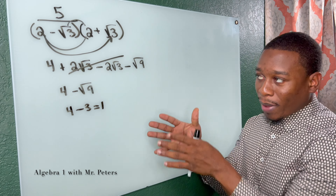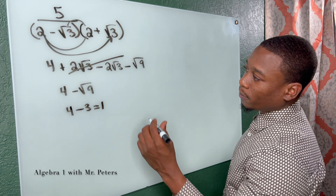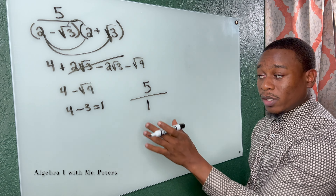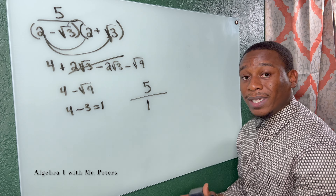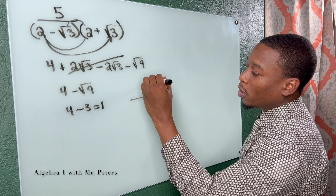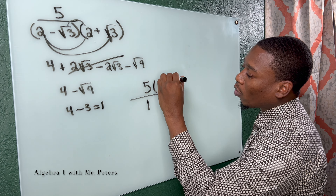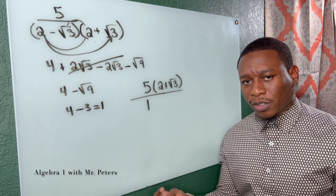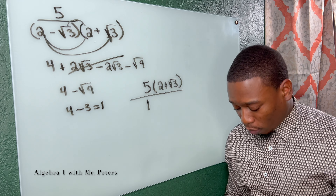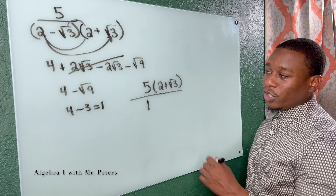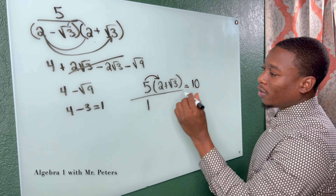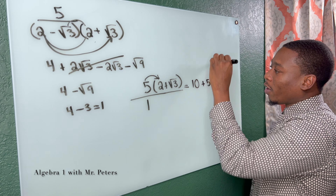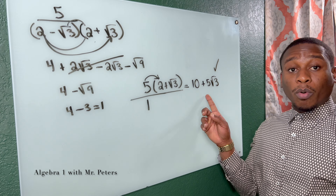So now let's bring this back into perspective. At this step, we have 5 over 1 — we simplified the denominator. What we did not do was multiply the conjugate by the top. So now I'm going to multiply by 2 plus radical 3 in the top part. I could get rid of this 1 in the fraction — I'm just keeping it there for the purpose of this problem. So now with this step, I just distribute. 5 times 2 gives me 10. 5 times radical 3 is going to give me plus 5 radical 3. And this is our final answer.